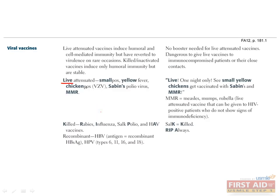Live vaccines incorporate attenuated or weakened viral strains and are effective against enveloped viruses that require cell-mediated immune responses to clear. The responses to a live virus will be Th1 and Th2, thereby stimulating longer-lasting immunity through the development of humoral, cellular, and memory immunity. The risk with live vaccines is that they can revert to active virulent strains. The live viral vaccines include smallpox, yellow fever, chickenpox (VZV), Sabin's polio virus, and MMR.